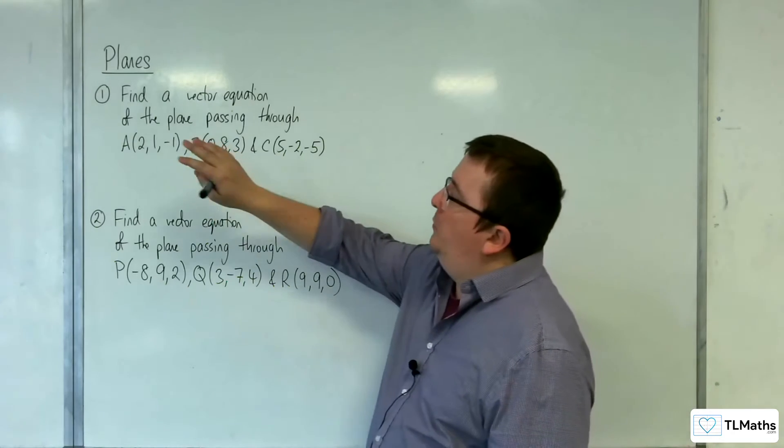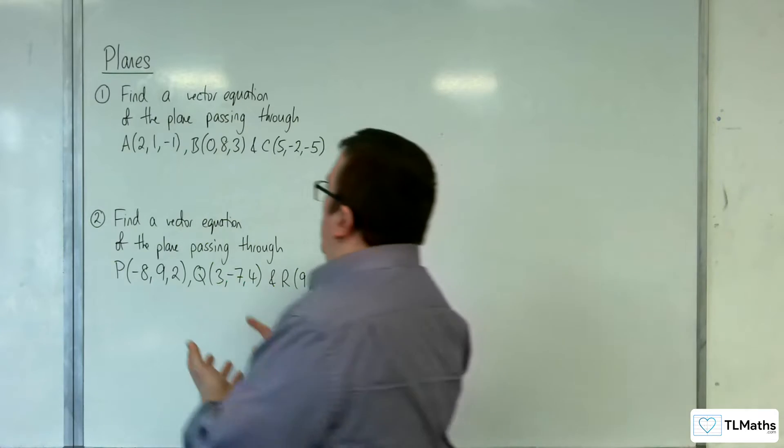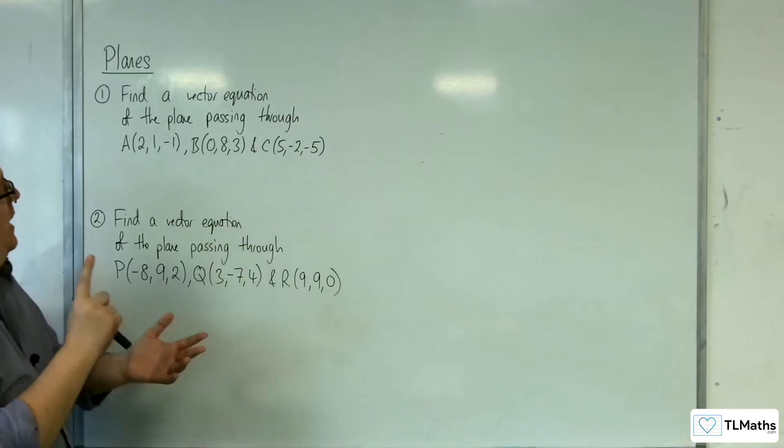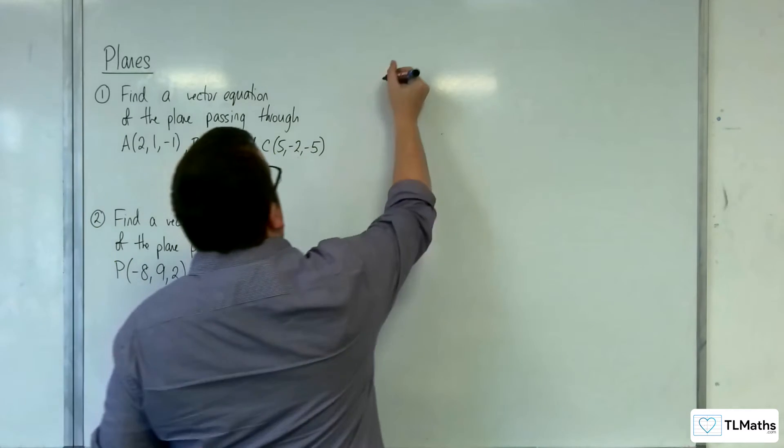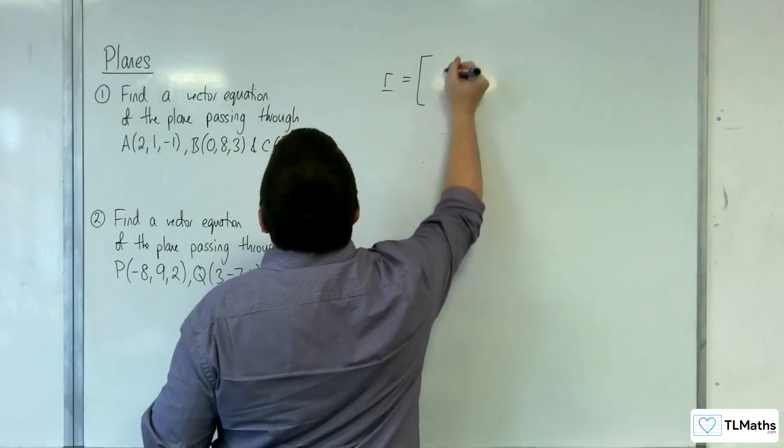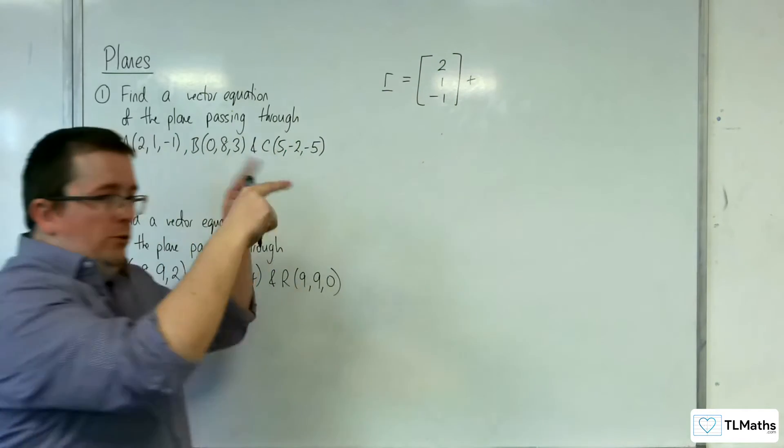So the first one we've got A, B and C. So what you want to do is you want to decide, let's let A be the position vector. Okay, so we're going to start off with r is equal to 2, 1, minus 1. So that gets me onto the plane.